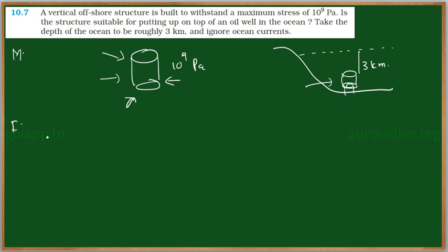The pressure that can be sustained by this object is 10 to the power of 9 Pascals. And this object we kept at the depth of 3 kilometers. So the height of the liquid column acting on this object h is equal to 3 kilometers. In SI system it is 3000 meters.